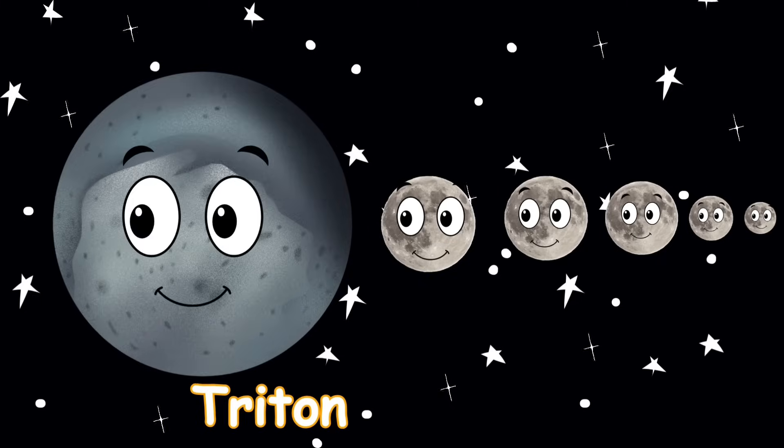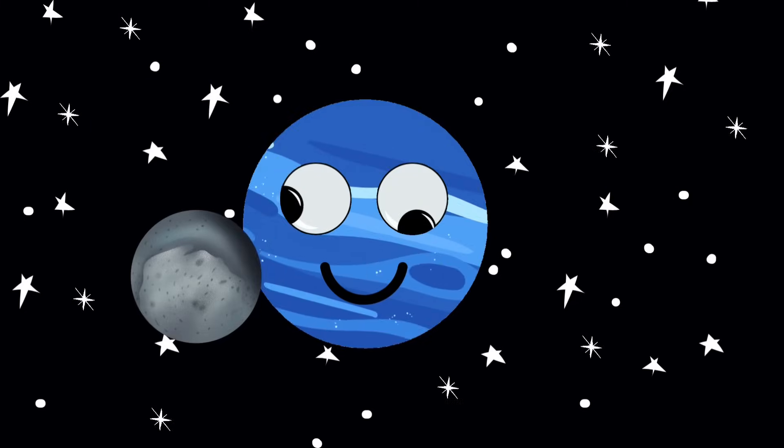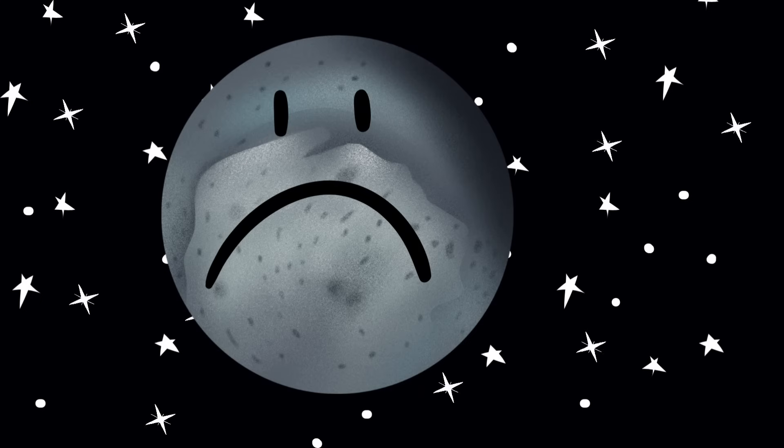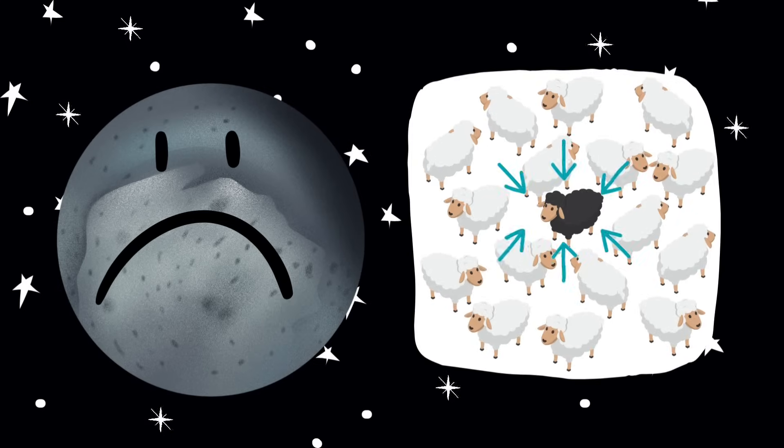Triton is the biggest, and guess what? It orbits backwards. Like, not even with the other moons. Just out there doing its own thing. It's basically the black sheep of the moon family.